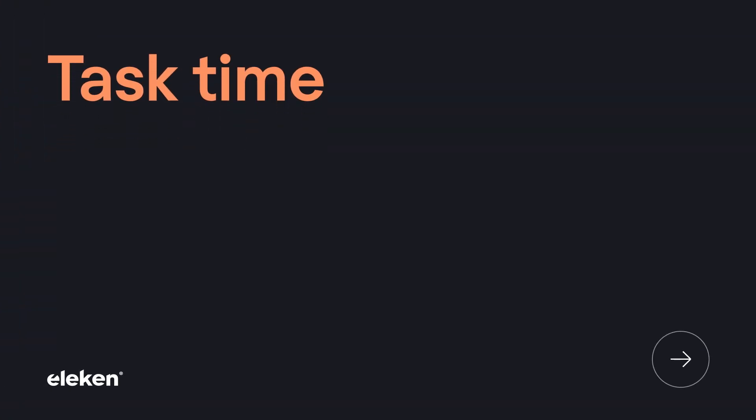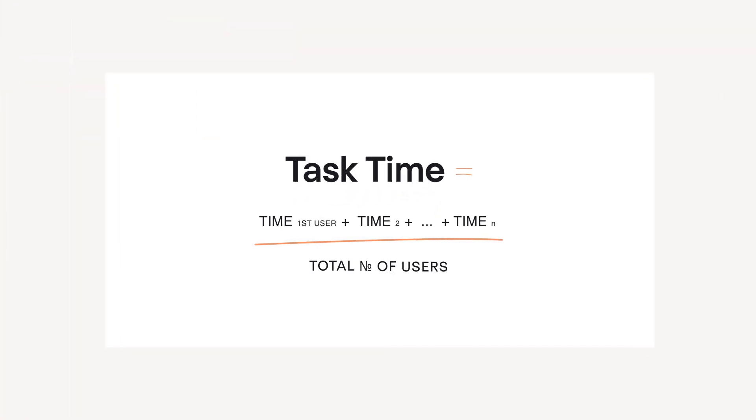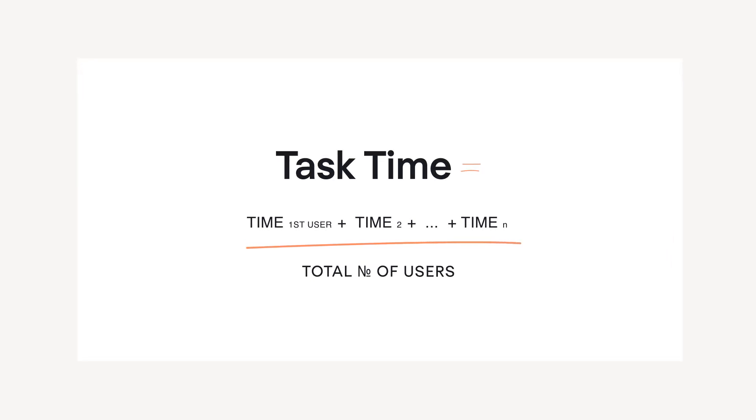Success score and error rate measure the effectiveness of the product. Now we move to the metrics used to measure efficiency, and the first one is task time. Good usability typically means that users can perform their tasks successfully and fast. The concept of this metric is simple: you take the task time of each user, add them up, and divide by the number of users.